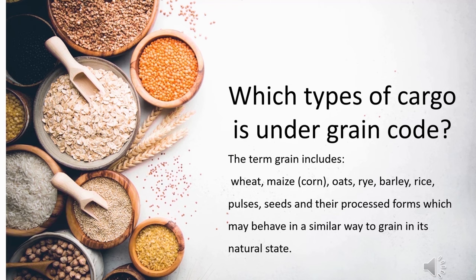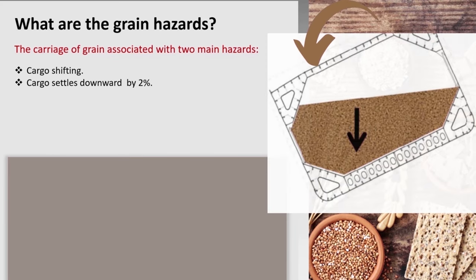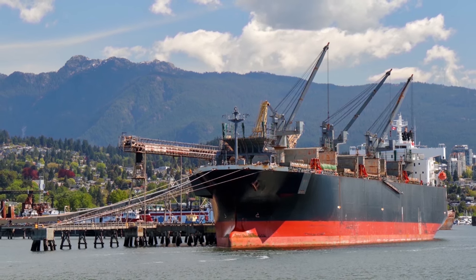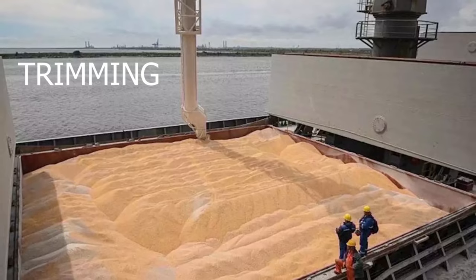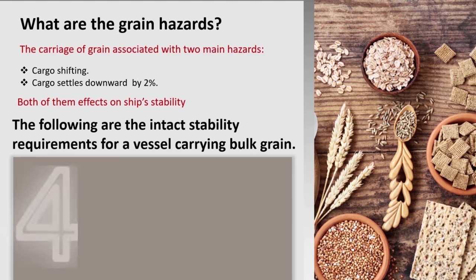Now let's see what are the hazards which come from this type of cargo. There are many types of hazards associated with grain loading, but there are two main hazards: cargo shifting and cargo settling down the void, and both of them affect ship's stability. That's why we have additional stability requirements which we should comply with at all stages of the voyage.